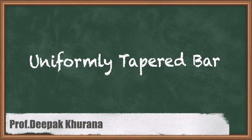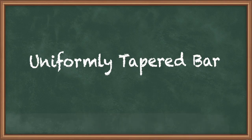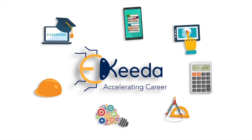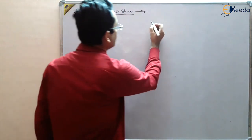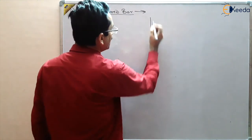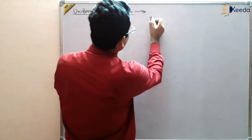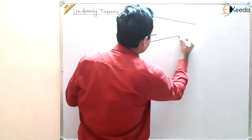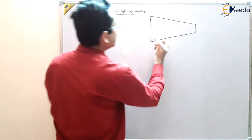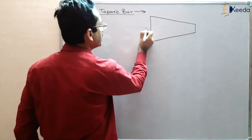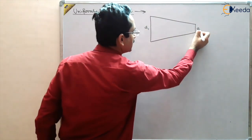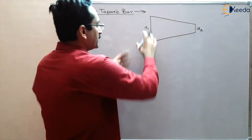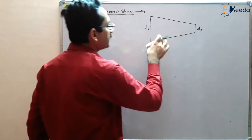How to find the total elongation in a uniformly tapered bar. We have a bar with diameter D1 at one end, which is uniformly tapering — the diameter is uniformly decreasing — until it reaches another diameter D2 at the other end. This is a uniformly tapered bar with forces applied at two points.